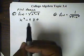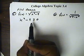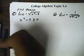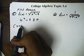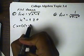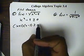So for this one, since everything is set to zero, I'm going to factor this. I have x plus 3 and x minus 3, all greater than or equal to zero.